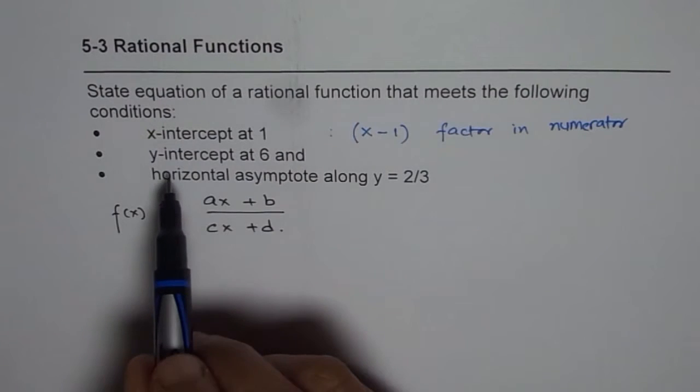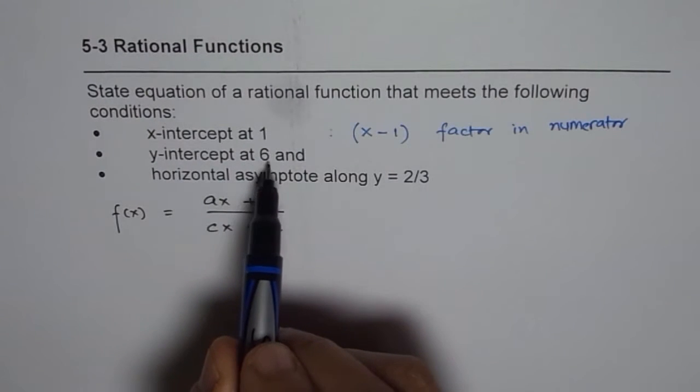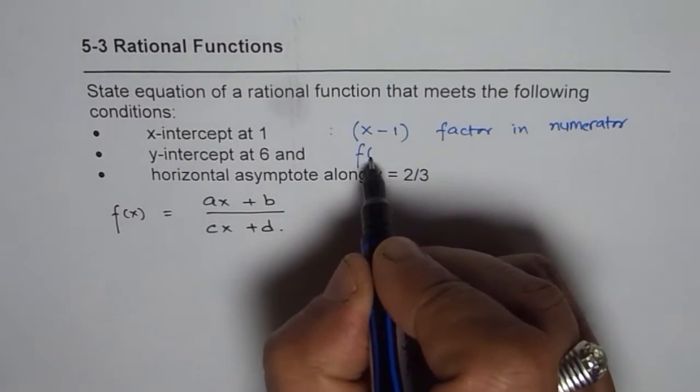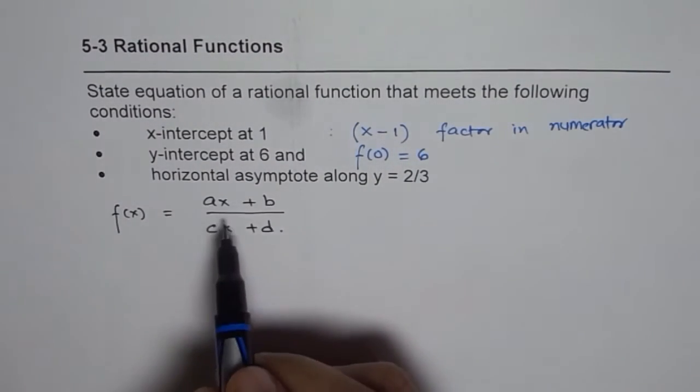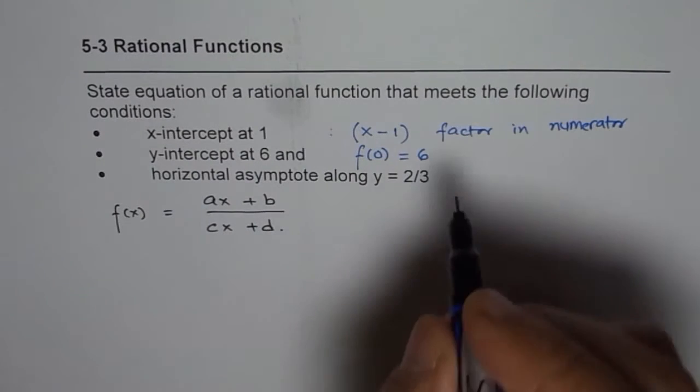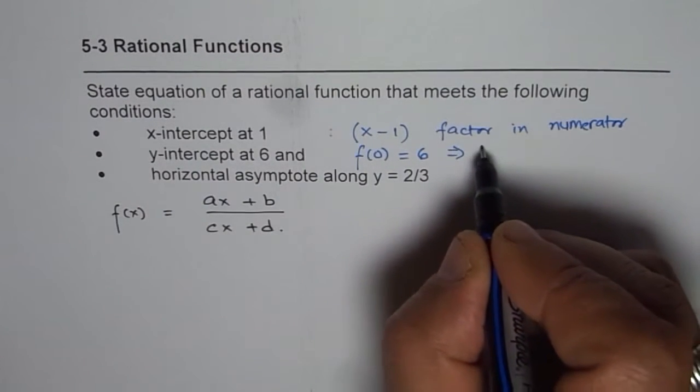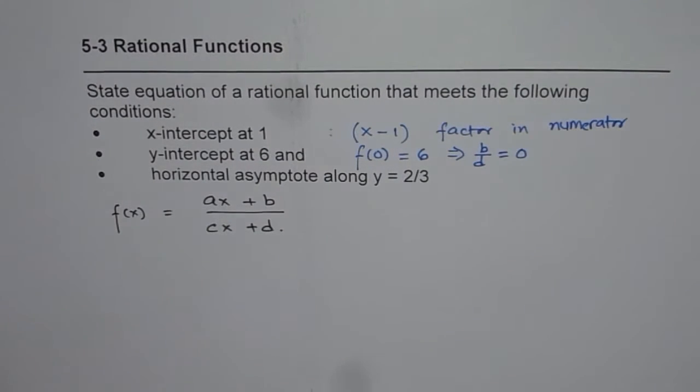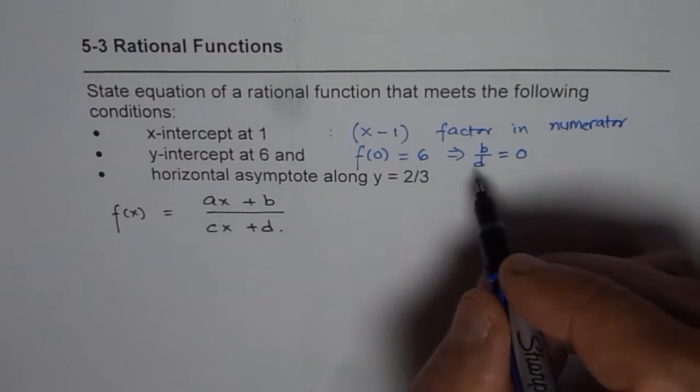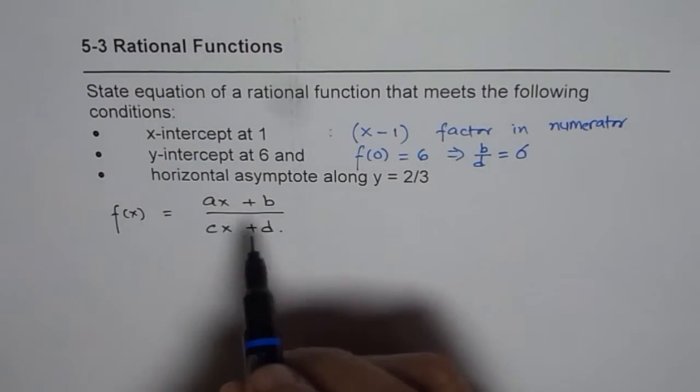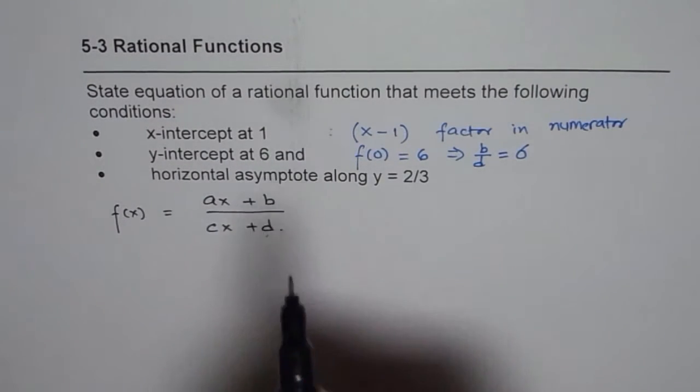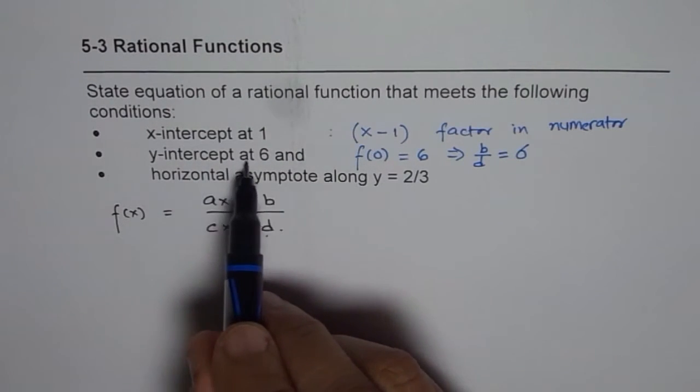That is what x-intercept at 1 means. Now y-intercept at 6. That means f of 0 equals 6. So if I substitute 0 here, that means b over d equals 6. Because when x is 0, then b over d should equal 6. That is the meaning of y-intercept at 6.